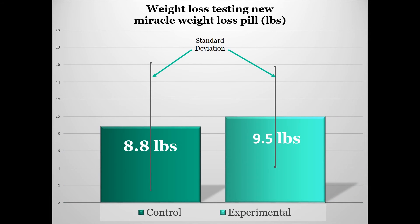Next is standard deviation. Not everybody loses 8.8 pounds in the control group or 9.5 pounds in the experimental group — there's variation. Some people lose a lot of weight; some lose very little. When you look at the standard deviation, you'll realize it's very large. There's a lot of overlap between the averages and the standard deviations, which might signify that our results are not significantly different.